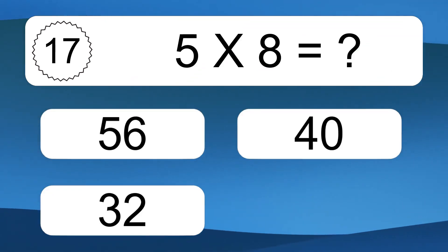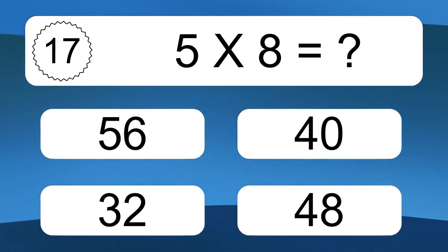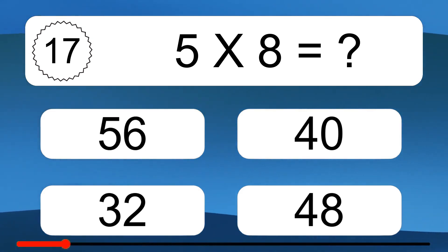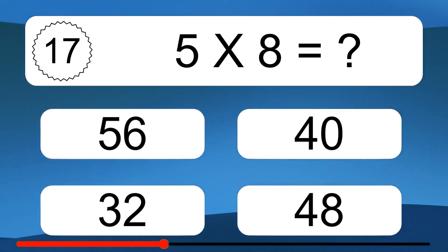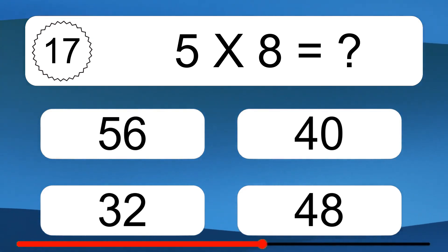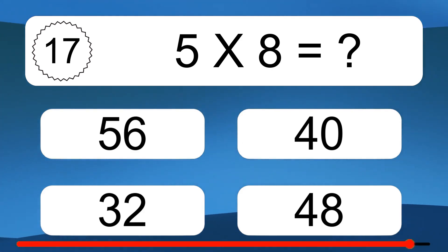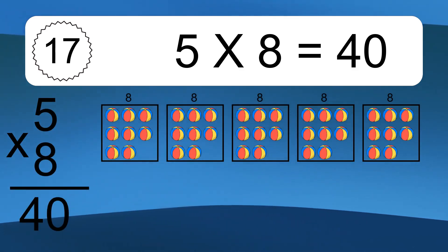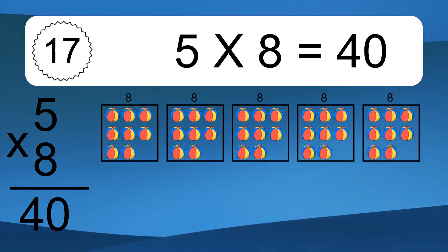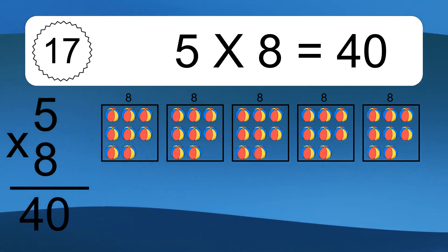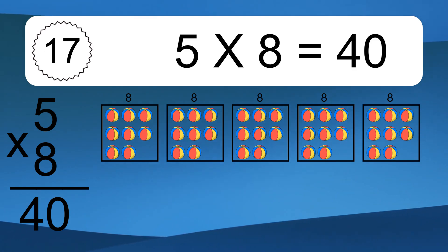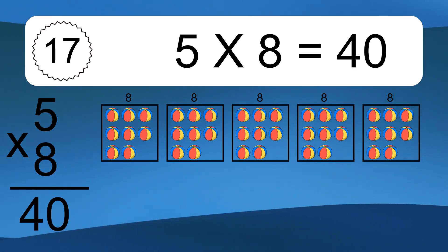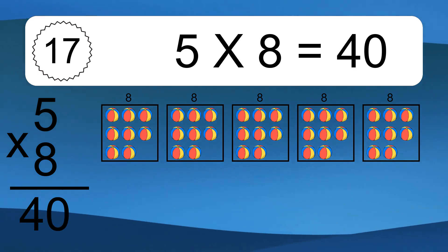5 times 8 equals what? We have 5 boxes, and each box has 8 colorful balls inside. If you count all the balls in all the boxes together, you will have 5 times 8 balls. This equals 40 balls.